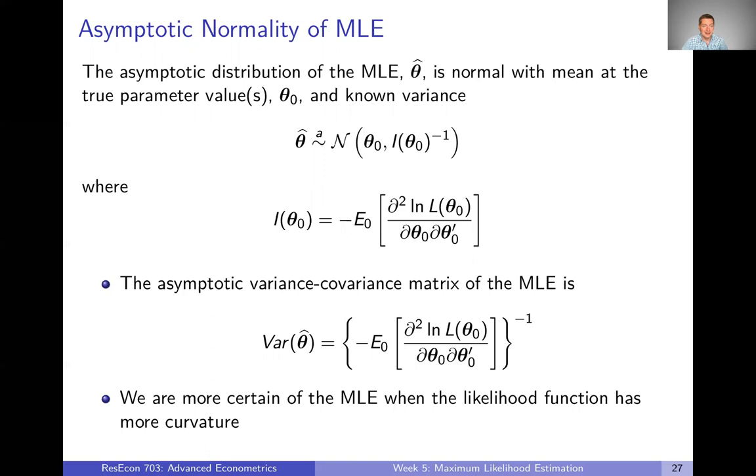Second property is that the asymptotic distribution of the maximum likelihood estimator is normal with a mean at that true parameter value and this known variance where here's the math for the variance. We're going to talk about the variance more in the next video, but basically the idea here is that we know asymptotically that this thing is normally distributed and we know what the mean and the variance are, which are both really nice. The variance depends on this second derivative thing and the expectation and the inverse. So this thing's a little complicated. And like I said, in the next video, we're going to talk about the variance component specifically.